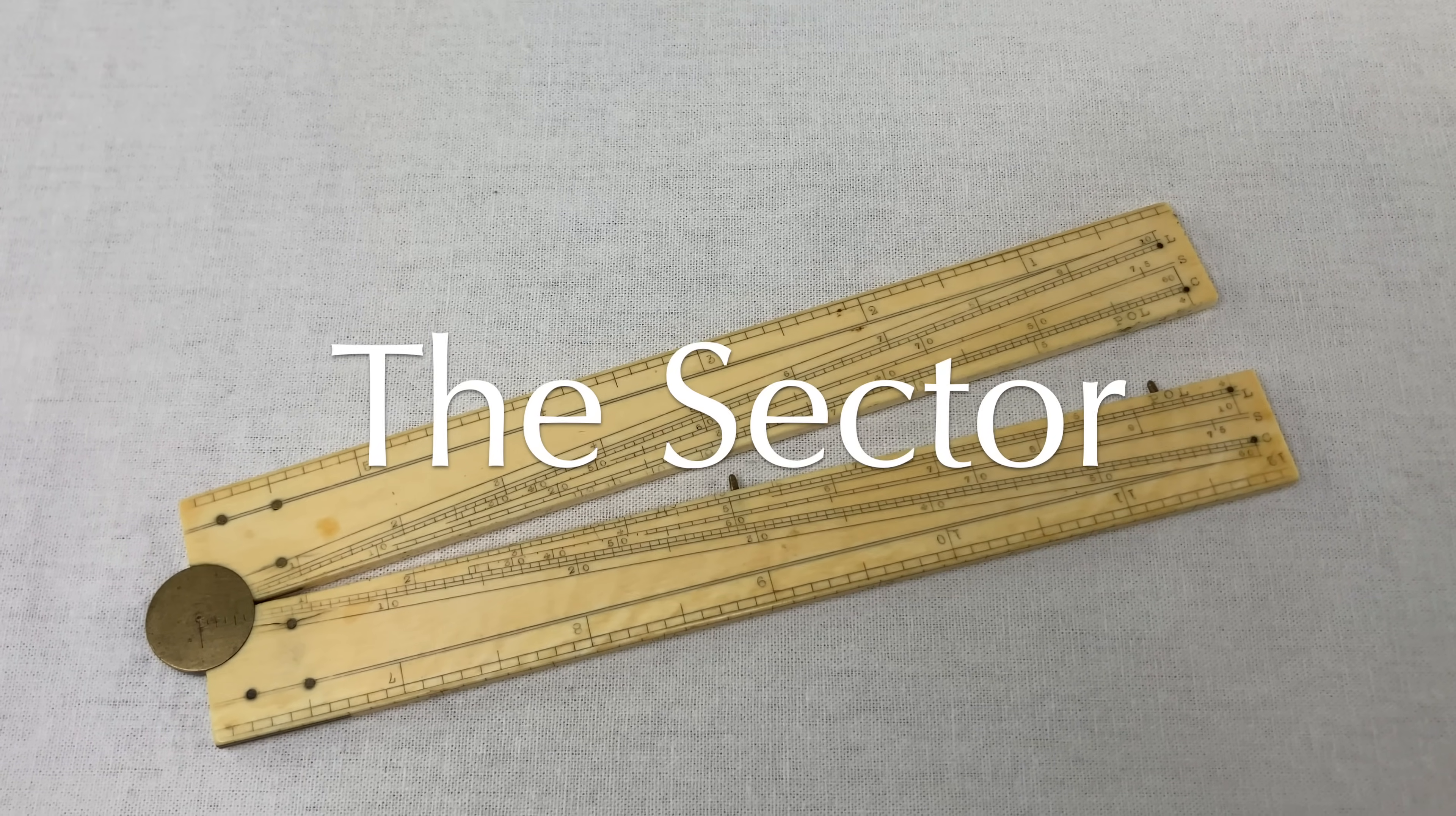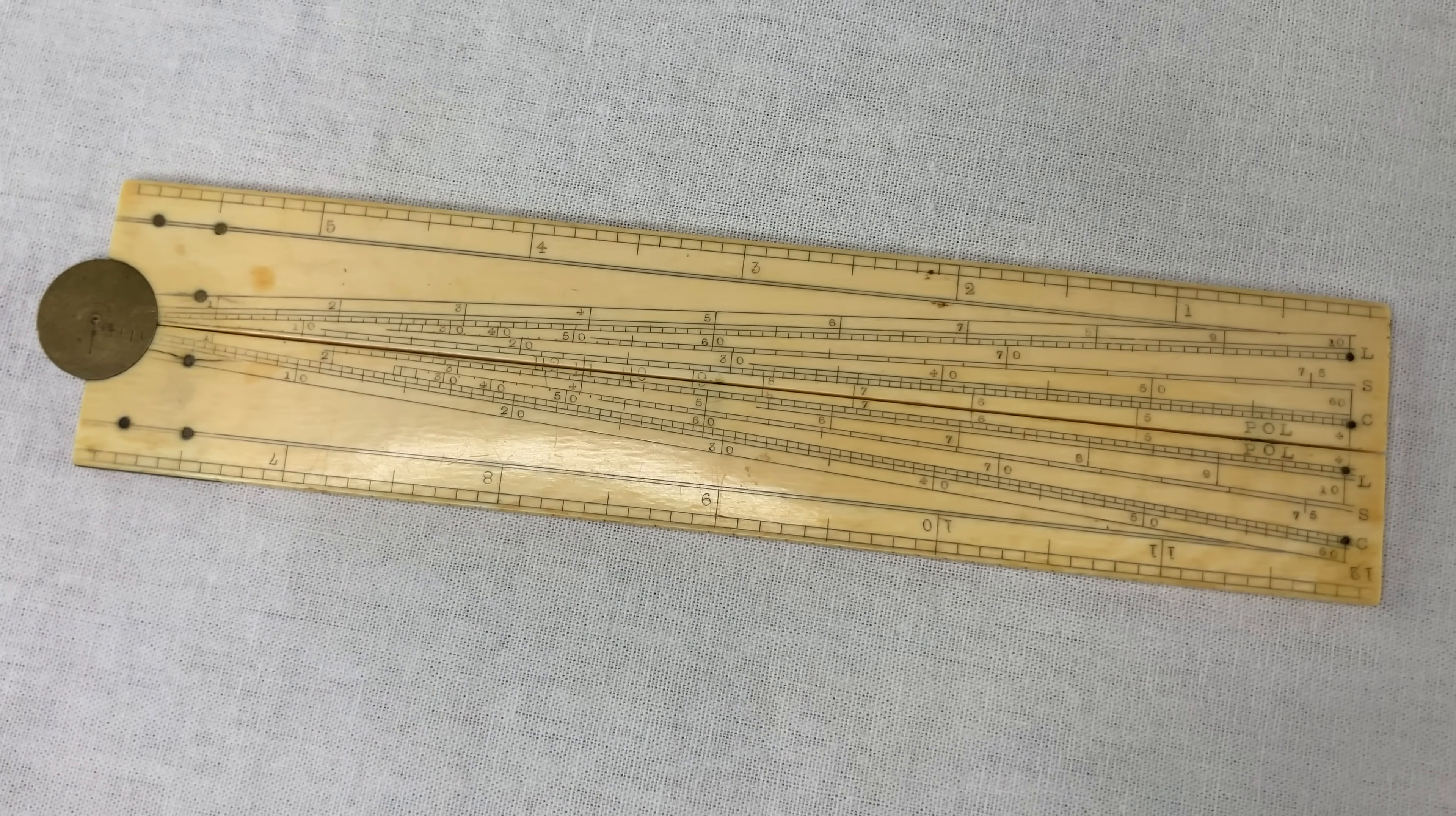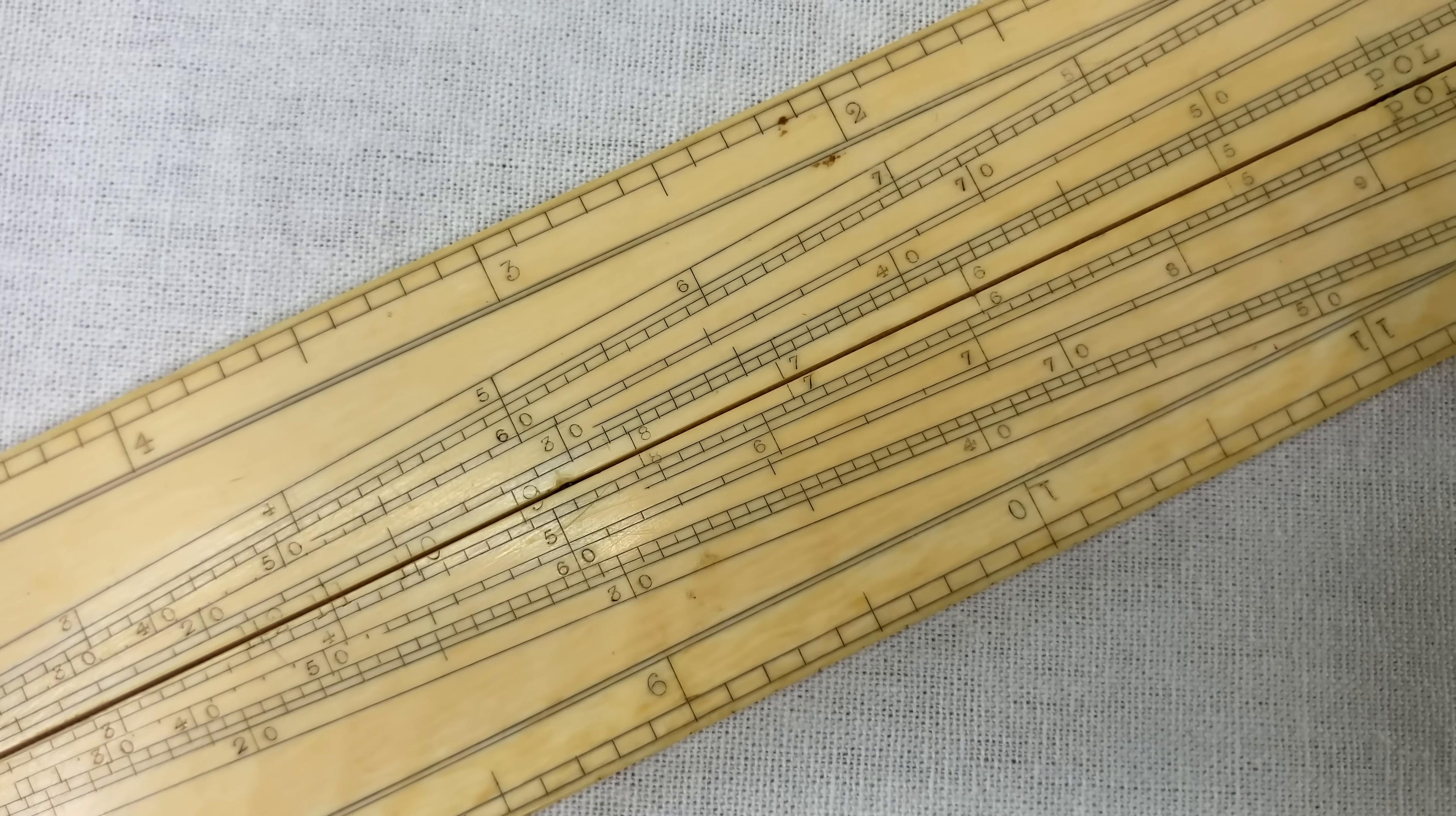This is an ivory sector from 18-something, I guess. This kind of thing is sometimes called a proportional compass, but it doesn't look like a compass at all.